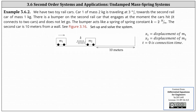We have two toy cars. Car one of mass two kilograms is traveling at three meters per second towards a second rail car of mass one kilogram. There is a bumper on the second rail car that engages at the moment the cars hit and does not let go. The bumper acts like a spring of spring constant k equals two newtons per meter. The second car is 10 meters from a wall. We will let x1 equal the displacement of mass one and x2 equal the displacement of mass two, and time t equals zero is the connection time of the two cars.